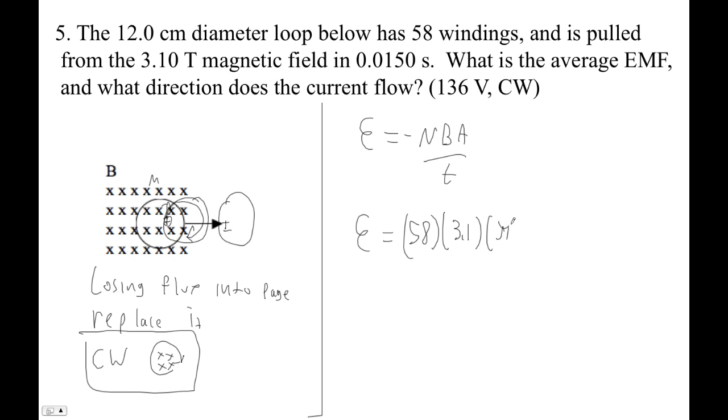Our area is pi times, let's see, it's 12 centimeters diameter. So it's 0.12 meters in diameter divided by 2 is 0.06 meters. That's our radius, right? So pi r squared, 0.06 squared, and then we can divide by 0.015.